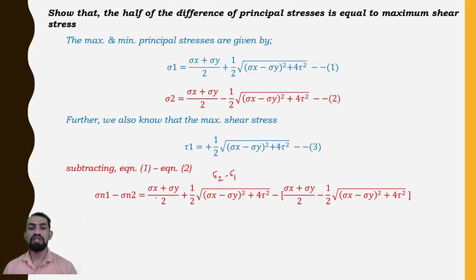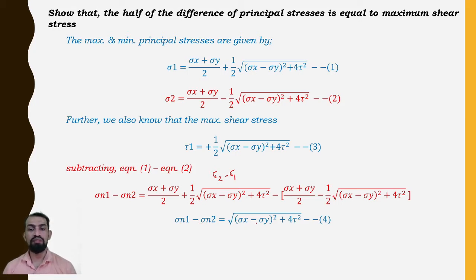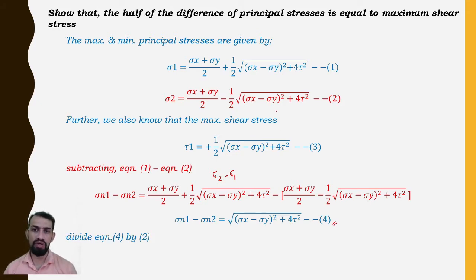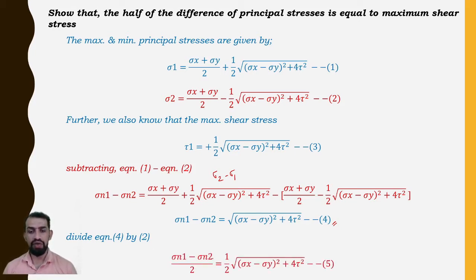When we subtract and simplify, we find that σn1 − σn2 = √[(σx − σy)² + 4τ²] as equation number 4. Dividing equation 4 by 2, we get: (σn1 − σn2)/2 = (1/2)√[(σx − σy)² + 4τ²], which is equation number 5.